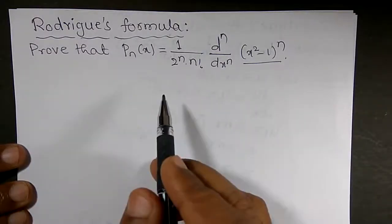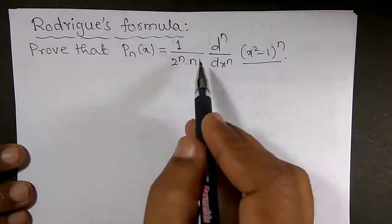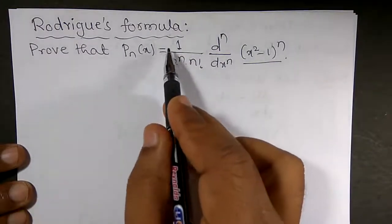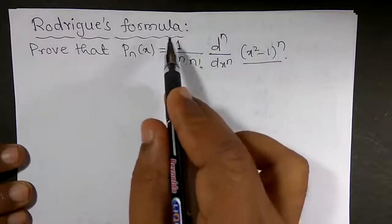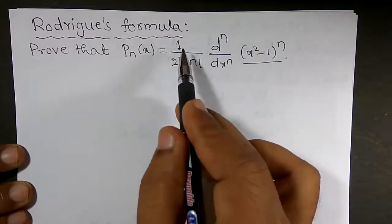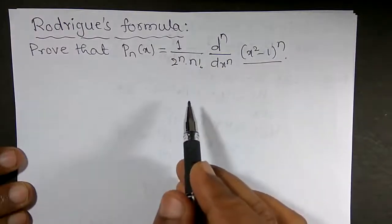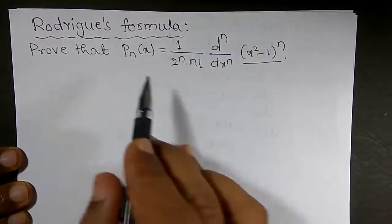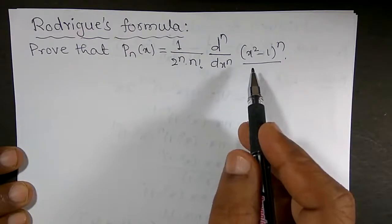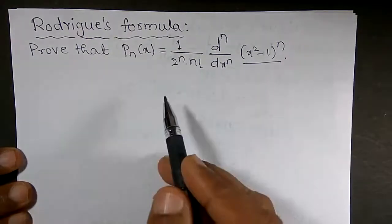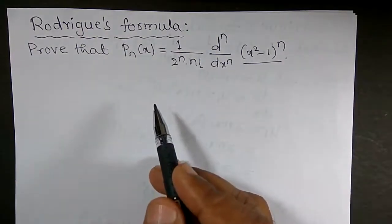I can find out the value of k. I will get the value of k equal to 1 divided by 2 to the power n into n factorial, and that becomes Rodrigues' formula.